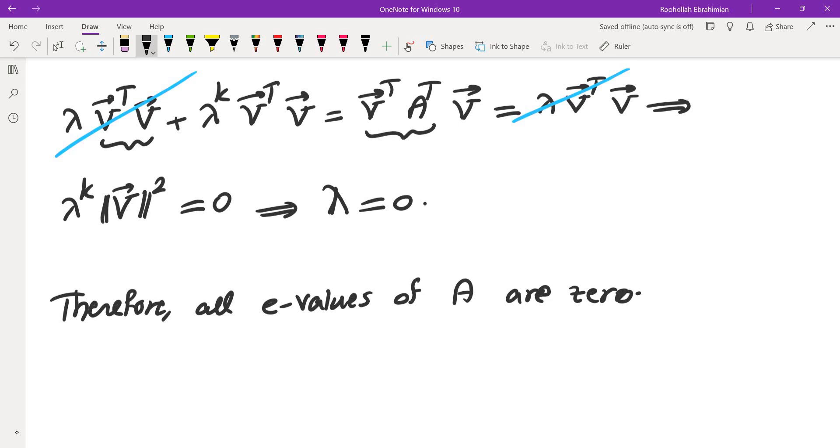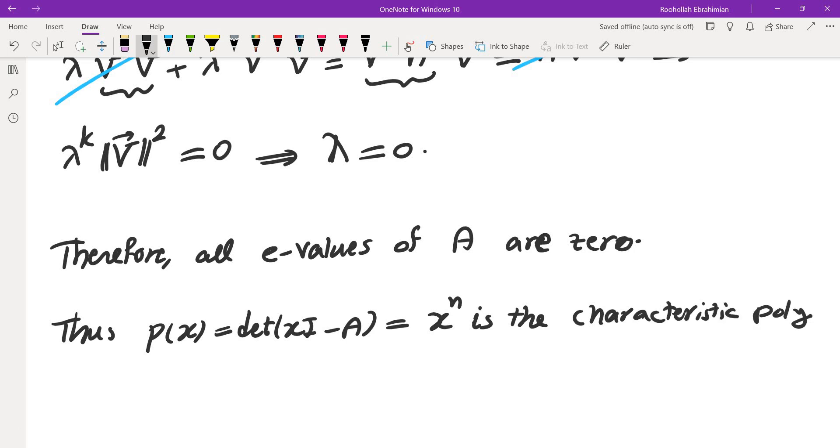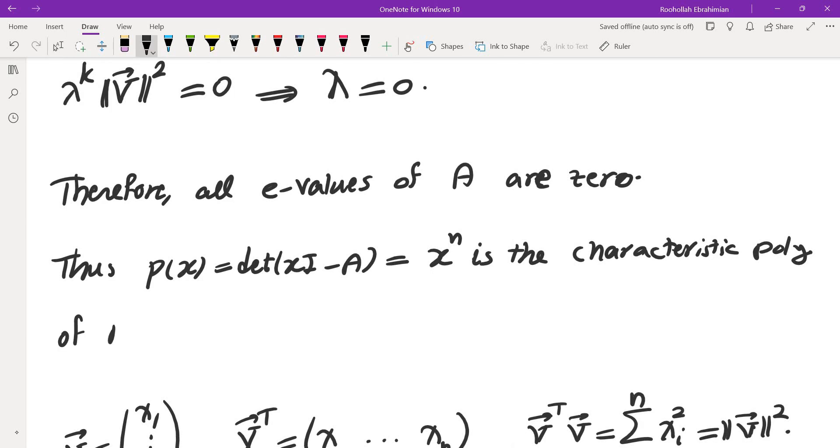Okay, so how would that in fact help? Since all eigenvalues are zero, we know that the characteristic polynomial would look like X to the power of N. Thus, P of X equals determinant of XI minus A would be just X to the power of N. And this is the characteristic polynomial of A.